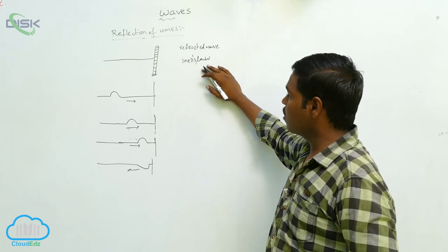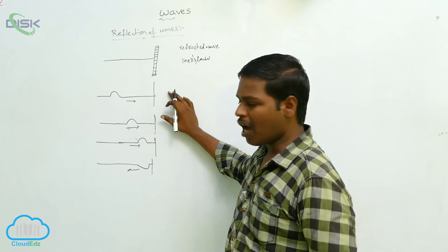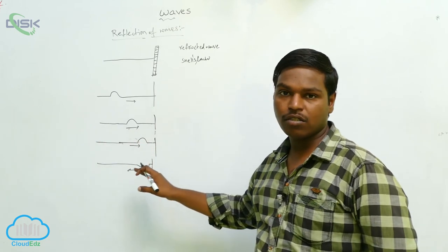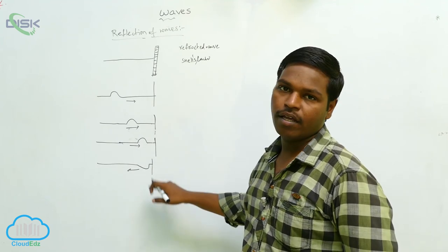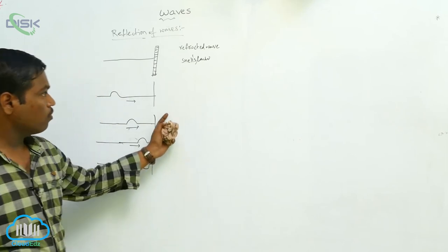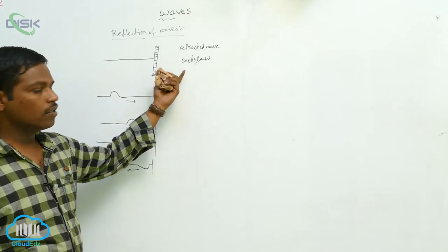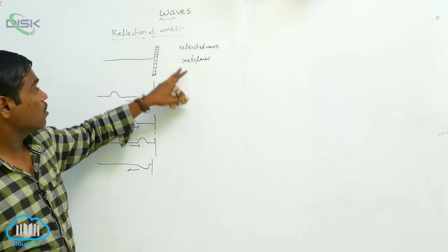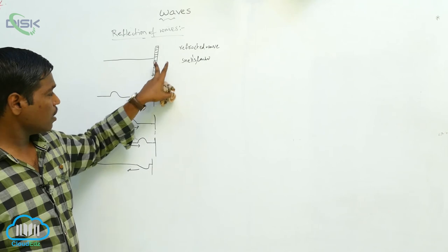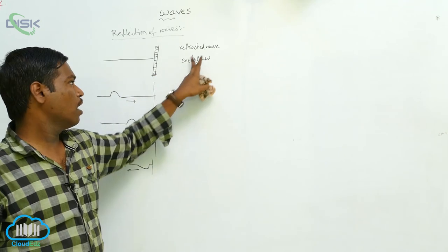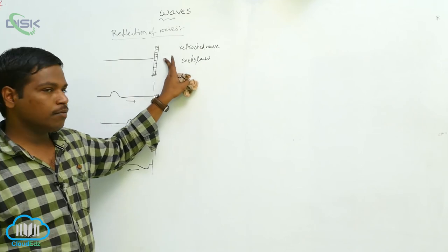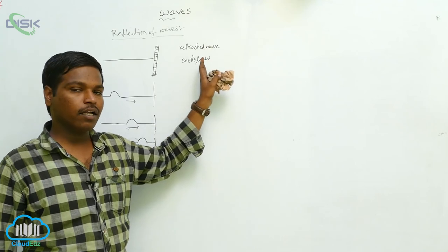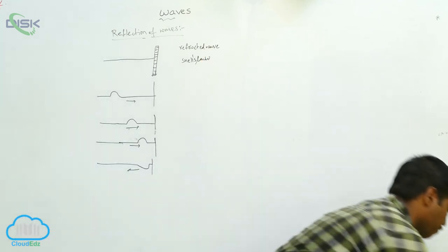When a wave is not transmitting and is reflecting back, the reflection laws are valid. In this reflection of waves, after reaching the end, the wave comes back in the opposite direction — that is the reflected wave. When some part of the wave is transmitted, that is called the refracted wave, and it follows Snell's law of refraction.